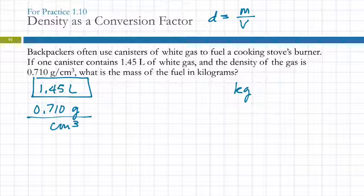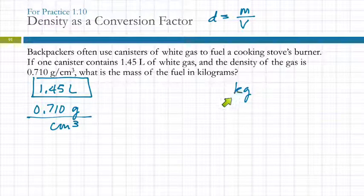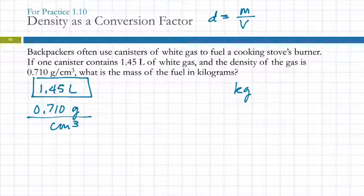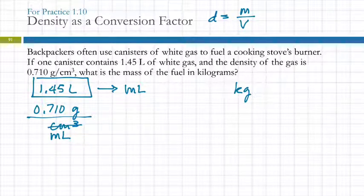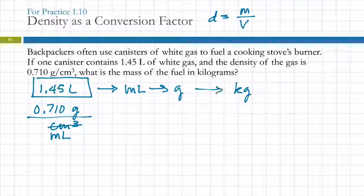We look at liters and kilograms — one's a volume, one's a mass — so we're going to need the density in the middle somewhere. But it doesn't have liters or kilograms in it; it's got cubic centimeters. What's another name for a cubic centimeter? A milliliter. So instead of writing cubic centimeters, we can write milliliters, which makes our life easier. So grams per milliliter: we can convert liters to milliliters, then this allows us to convert from milliliters to grams, and then we've learned how to do grams to kilograms. So there we go.